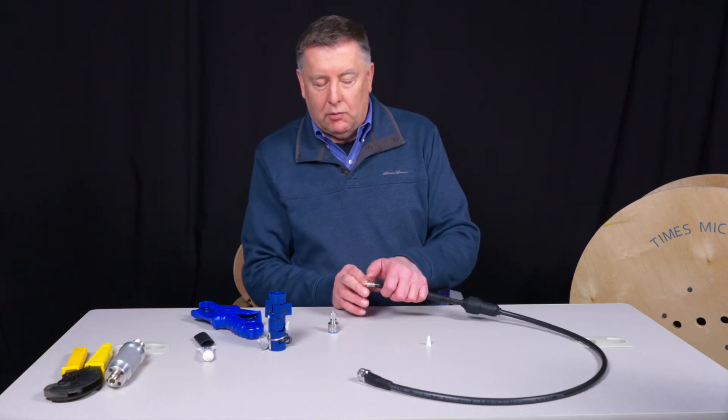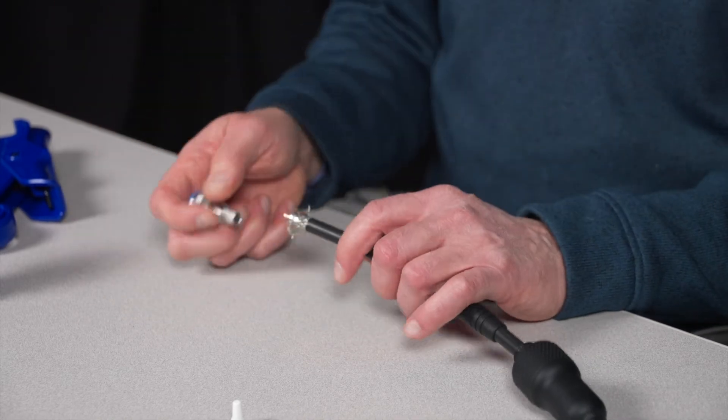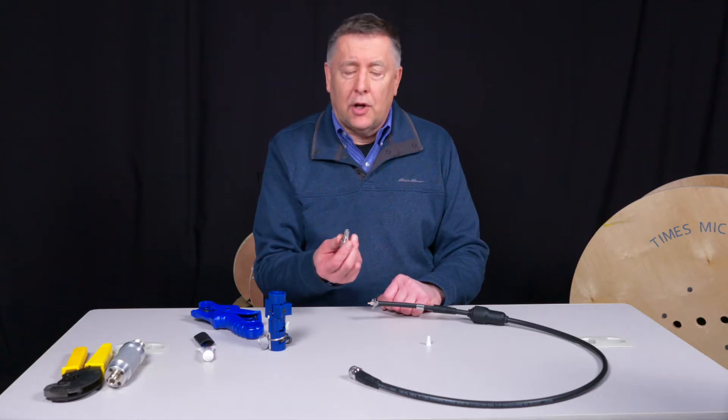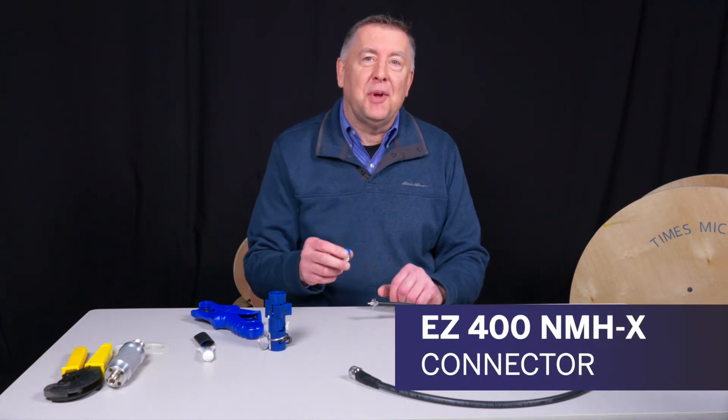At this point, you just take the outer braids, fold them back a little bit. No need to comb them out or anything. This connector's got a beryllium-copper spring finger contact, so there's no soldering. Very easy. It's called an EZ-400 NMH-X.